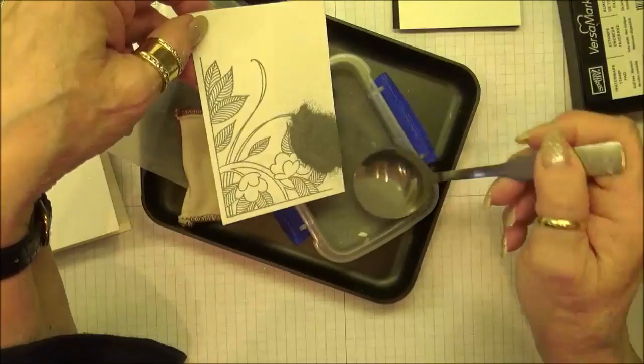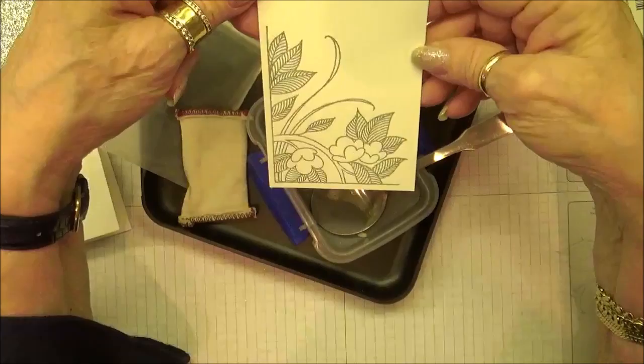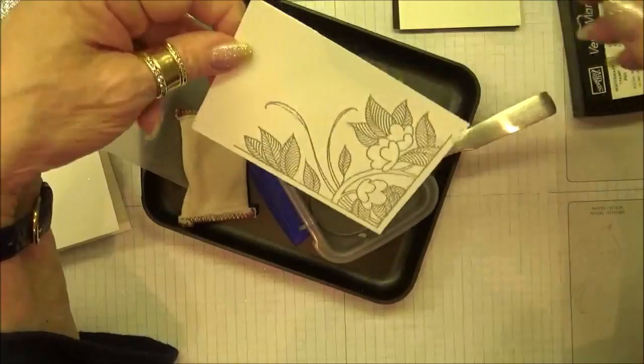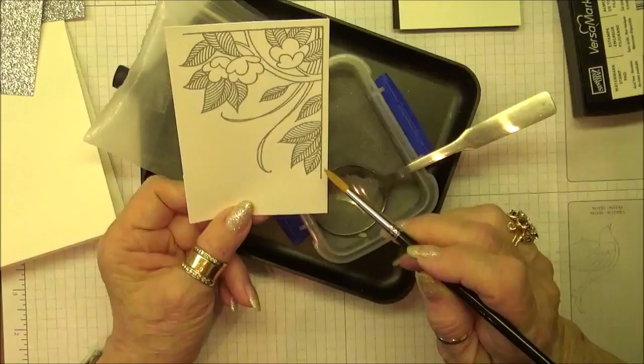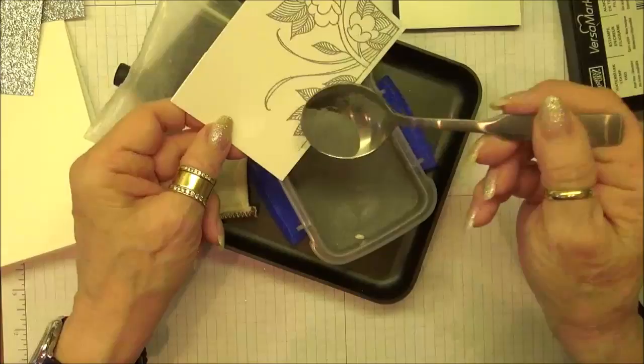The embossing powder sometimes clumps up and then it doesn't go on uniformly. I found a tip by someone who recommended adding the rice to the powder and I've not had that problem ever since. I'm going to go ahead now and take off this little smudge that I have right there and put a little more powder on. Tap off the excess.